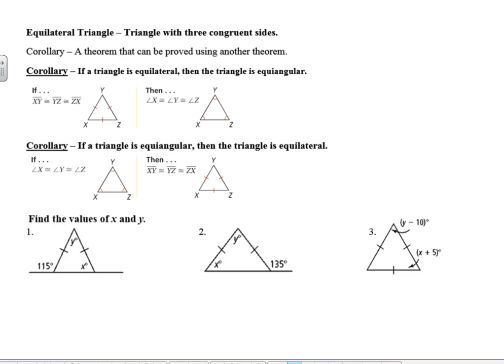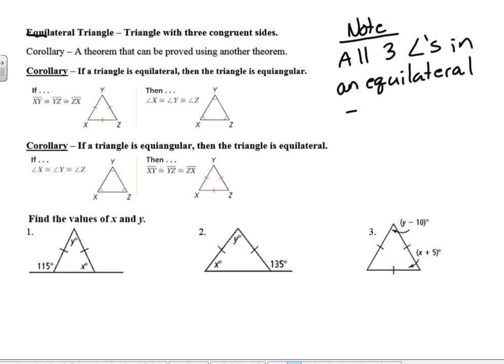Turning to equilateral triangles — the prefix 'equi' means equal, so equilateral means equal sides. An equilateral triangle is a triangle with three congruent sides. A corollary is a theorem that can be proved using another theorem. The corollaries here are: if a triangle is equilateral then it is equiangular, and if a triangle is equiangular then it is equilateral. All three angles in an equilateral triangle equal 60 degrees, since 180 divided by 3 equals 60.